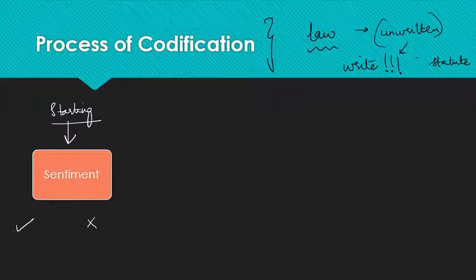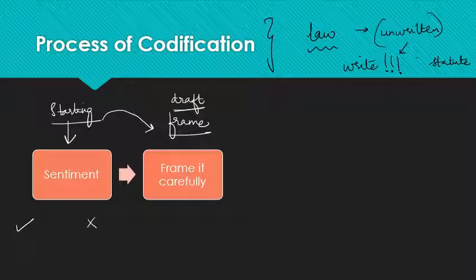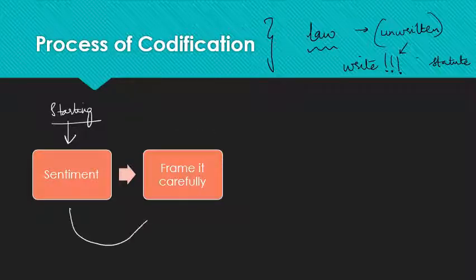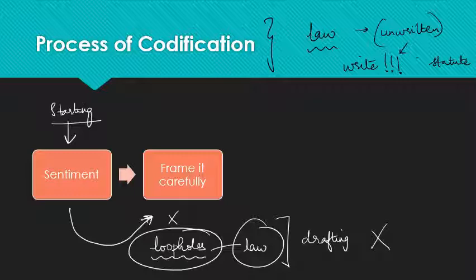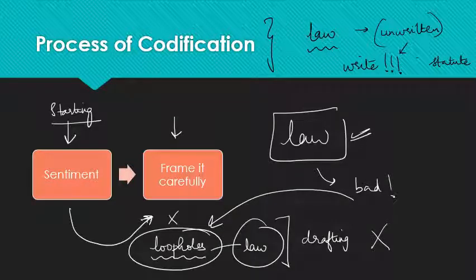After identifying the sentiment, you frame it carefully and draft it carefully. Legislative drafting is a very important skill. If you don't draft carefully enough, you would have loopholes. Loopholes in the law often arise because drafting has not been careful — you can follow the law yet still do something bad because you've found a loophole. The skill of drafting lies in framing it so carefully that there are no loopholes.